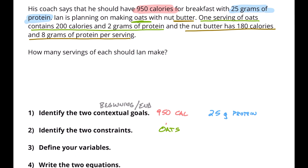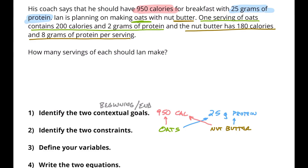Now we need to define our variables. With the oats, there was information about calories and information about protein. And with the nut butter, there was also information about calories and information about protein. This is where some of that information starts to intermix and gets really confusing. But what we're going to do is create two separate equations based on our goals — one for calories and one for protein — using both oats and nut butter in each.